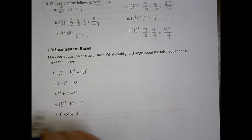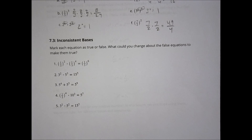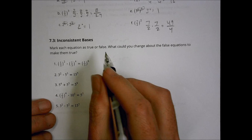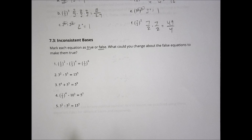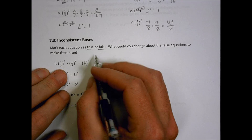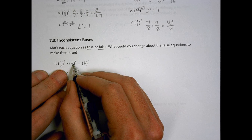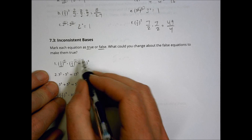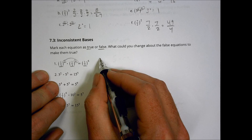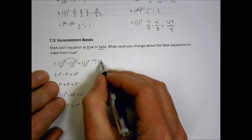This next part is about inconsistent bases, and it will build us in preparation for an upcoming lesson where the bases get a little different. First, we decide if the statements are true or false and what we could change about false ones to make them true. There are really just two true ones and three false ones. In the first one, we have one-third to the second times one-third to the fourth. The bases are all the same, so we add the exponents: two plus four is six. That's a true statement.